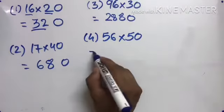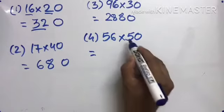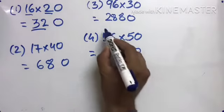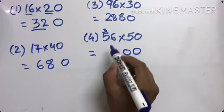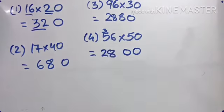56 multiplied by 50. So one zero. 5 times 6 is 30, carry 3. Write the zero. 5 times 5 is 25 plus 3 is 28. Understood?